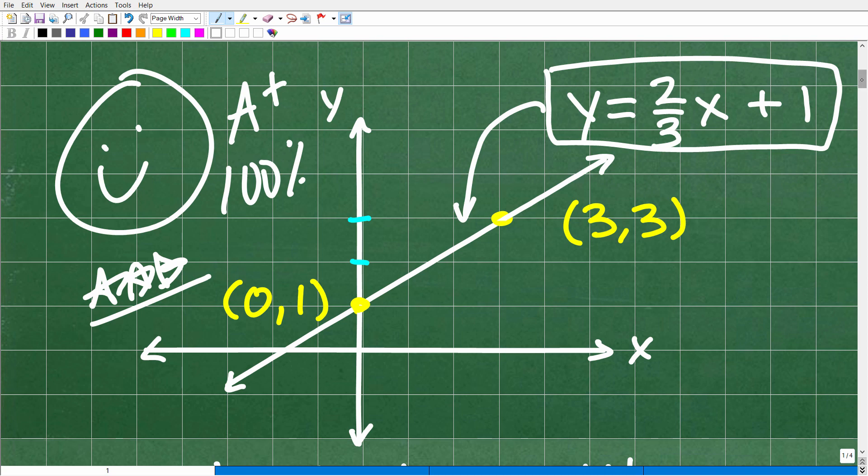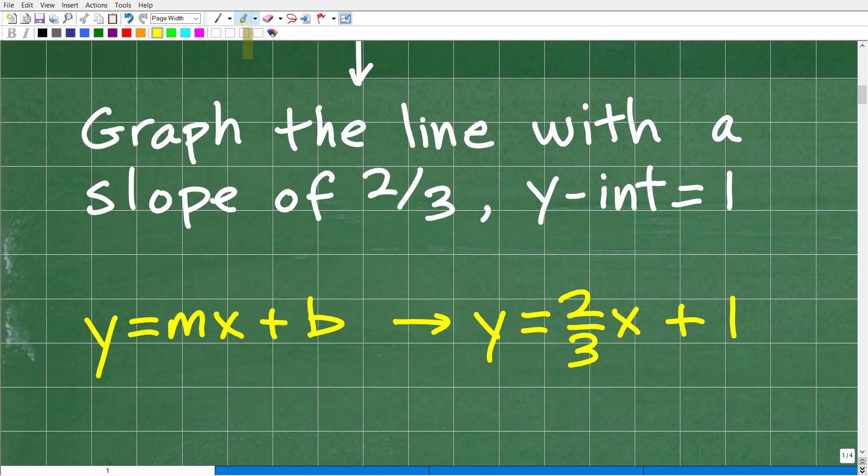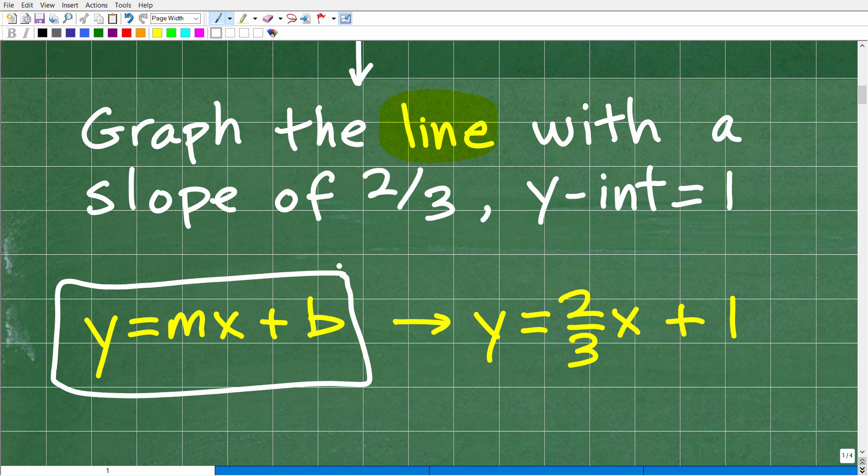So let's go ahead and get into the actual solution here. What we're going to do is graph the line. When you see the word line in algebra, it's basically synonymous with linear equation. So I could say graph the linear equation with a slope of two-thirds and y-intercept equals 1. You just need to understand that the term line, by definition, is the same thing. It's the graphical representation of a linear equation. So in algebra, probably the number one way to graph lines, graph linear equations, is using the slope-intercept form. That is y = mx + b. So hopefully you're familiar with this form of a line or this form of a linear equation.